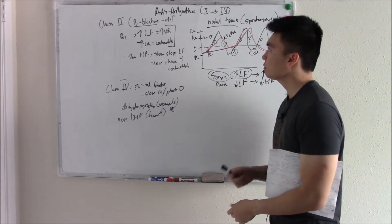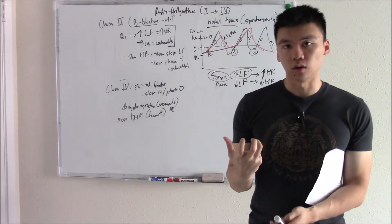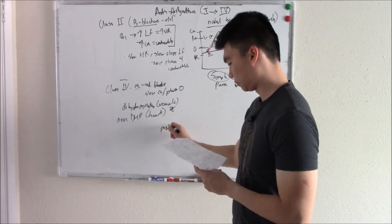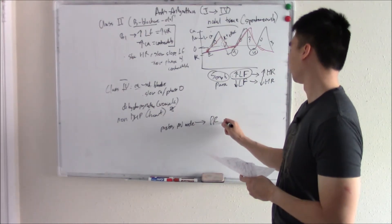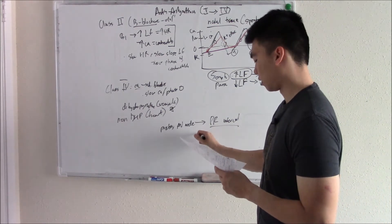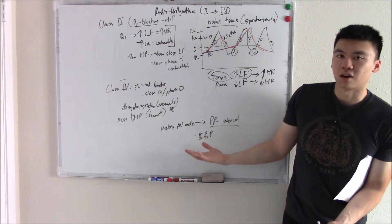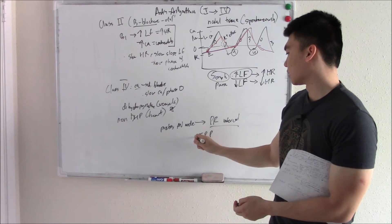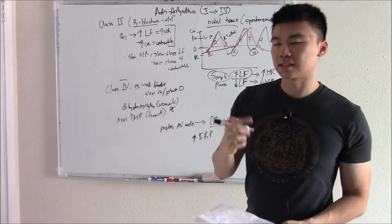These class two and class four drugs all work on your nodes — your SA node and AV node. If it prolongs your AV node conduction, that means it prolongs your PR interval. A fancy way of saying this is that it prolongs your effective refractory period — basically the time it takes for each beat to happen. So don't get confused if you see that phrasing in an answer choice.